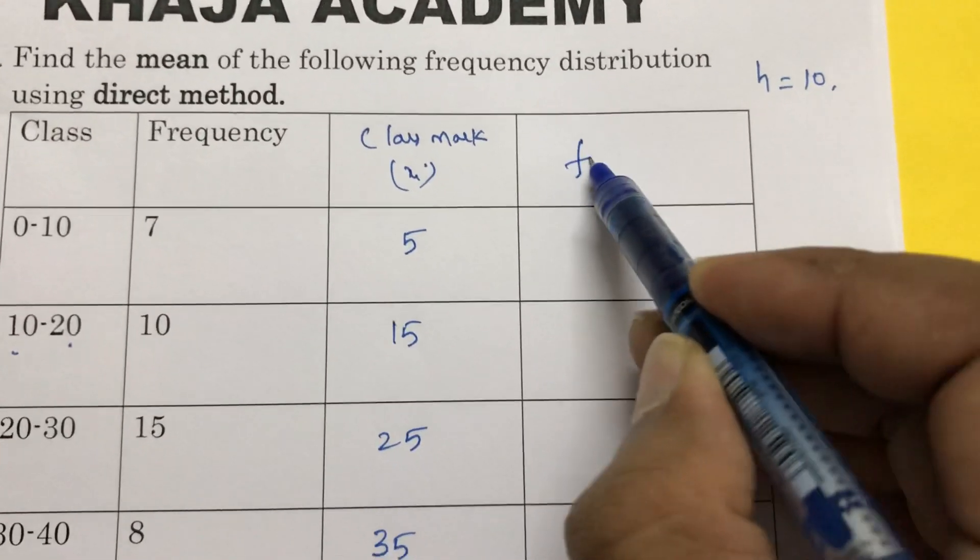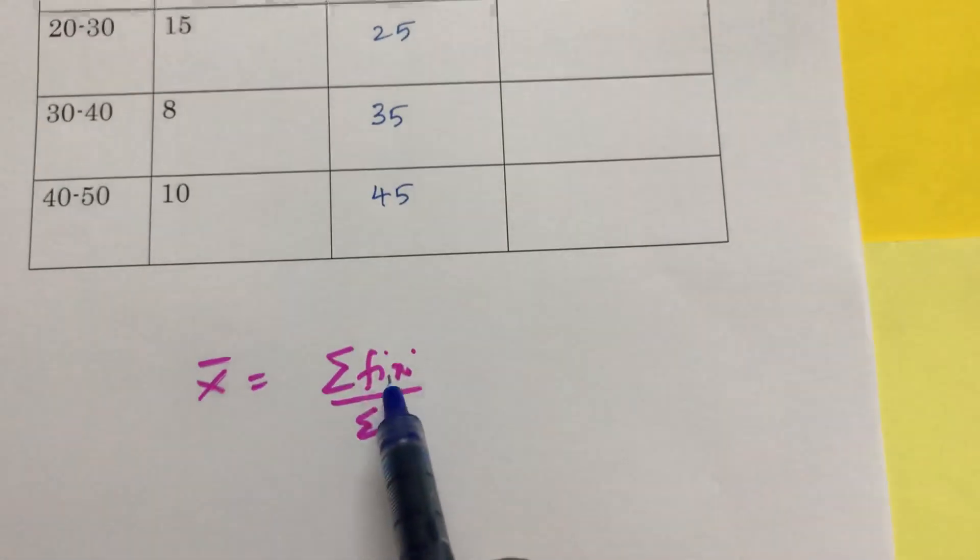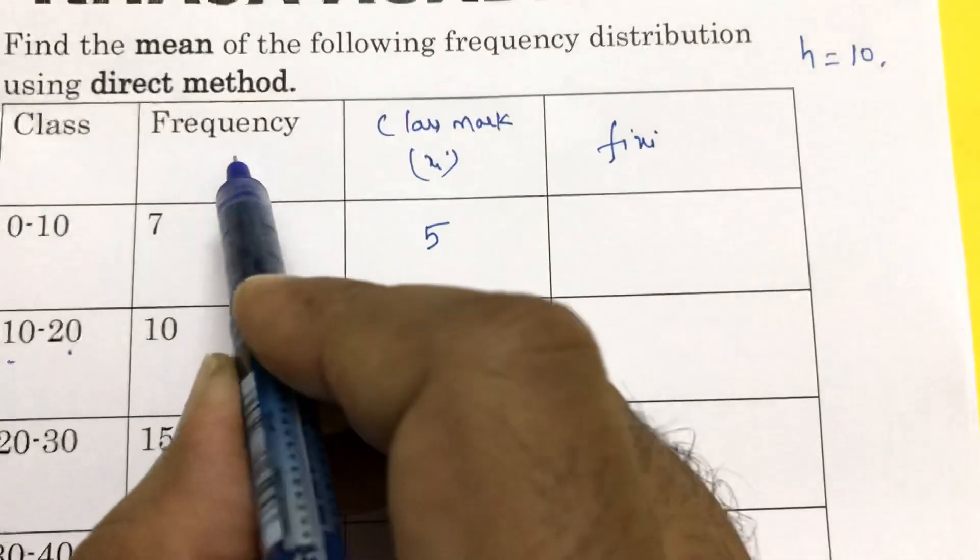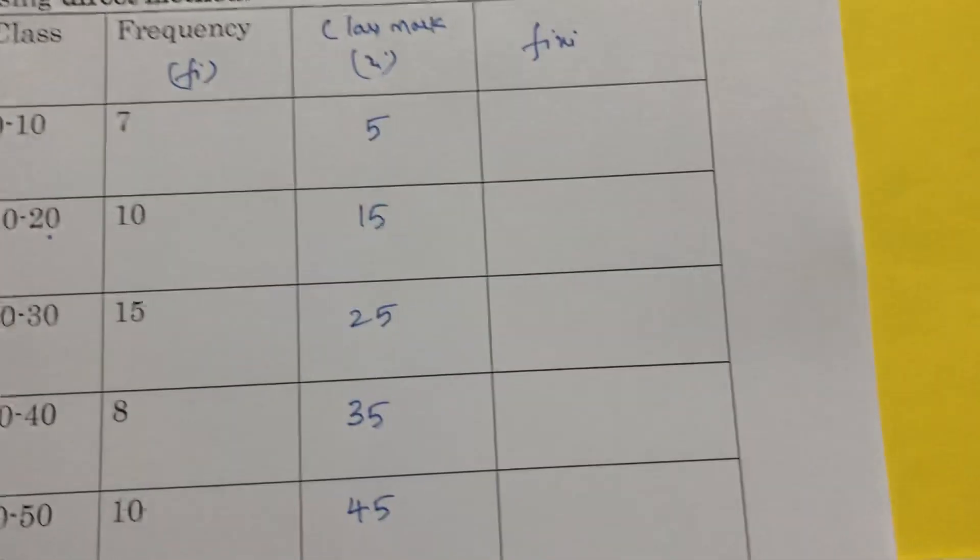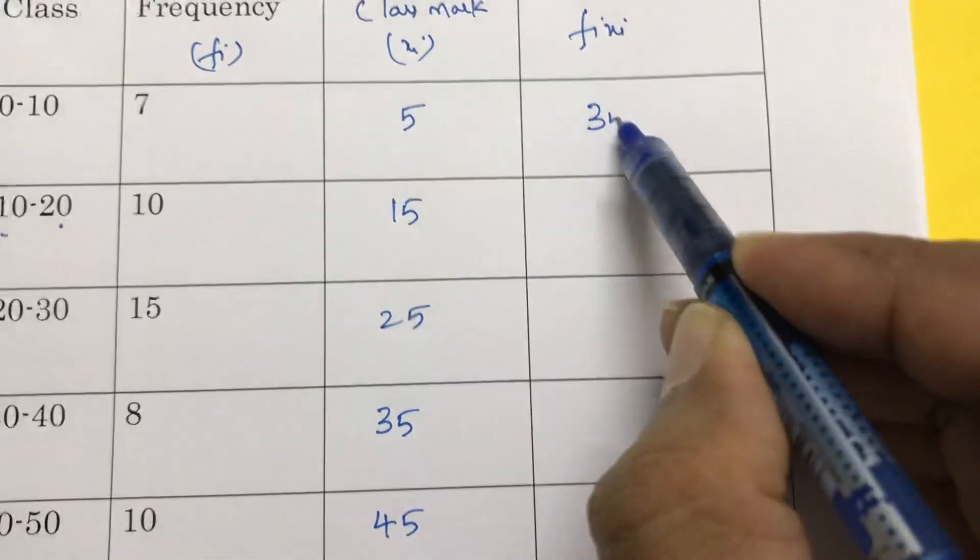In this way we get xi values, because you need the value of fi xi. fi is nothing but frequency. 7 times 5 is 35.